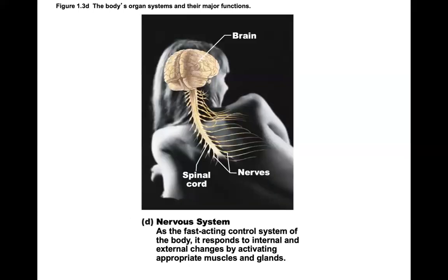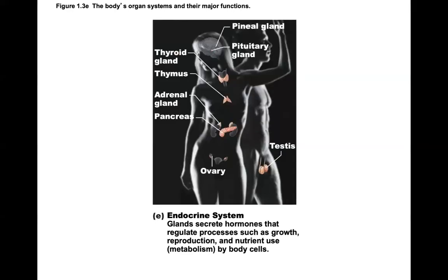The nervous system is a fast-acting control system of the body that responds to internal and external changes by activating appropriate muscles and glands. The endocrine system contains glands that secrete hormones regulating processes such as growth, reproduction, and nutrient use — including metabolism — by body cells.